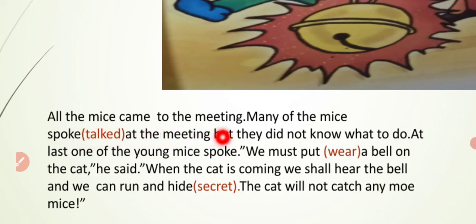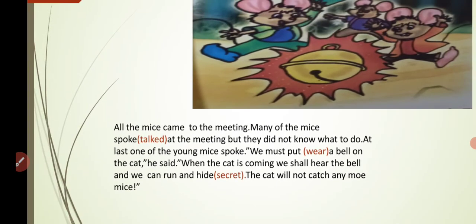'At last, one of the young mice spoke' — a young mouse, not very old in age, talked. 'We must put a bell on the cat,' he said — we should hang a bell around the cat's neck. 'When the cat is coming, we shall hear the bell' — when the cat approaches, we will hear the bell ringing. 'And we can run and hide' — hide means to conceal yourself. 'The cat will not catch any more mice.'